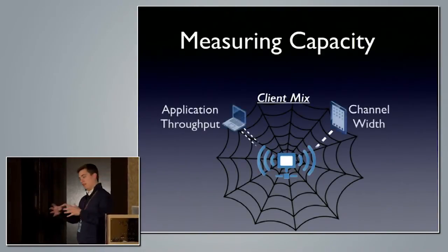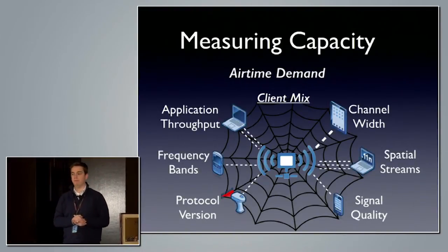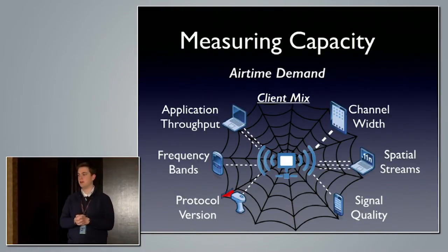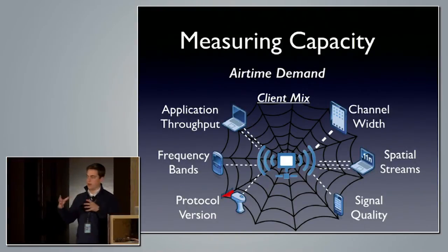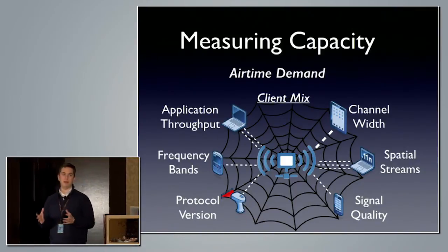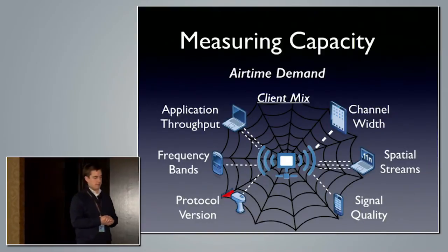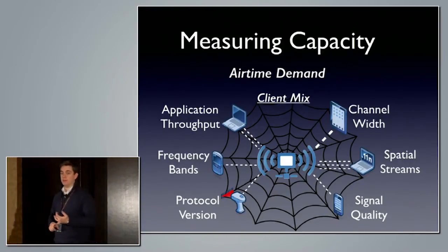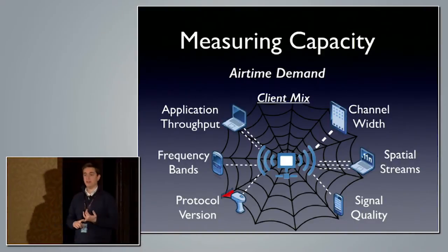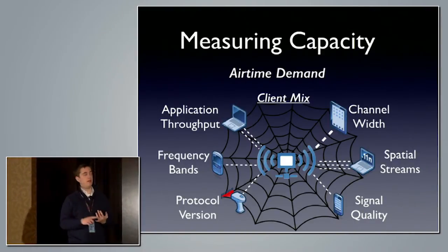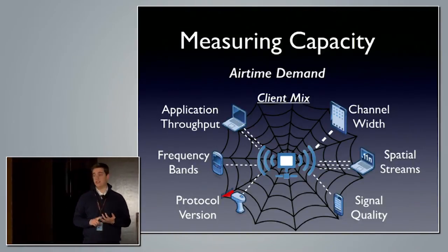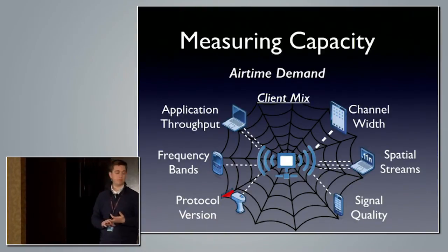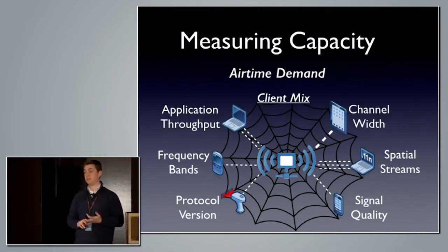We measure capacity within a cell — I'm going to focus on in-cell capacity, not co-channel interference mitigation. Within a cell, how many clients can I pack in there? It's all completely based on airtime demand. What dictates how much airtime every client uses? It's dependent on a lot of variables: the channel width the client supports and is configured on the AP, how many spatial streams it supports, signal quality — which determines data rate and the rate adaptation algorithm — and the protocol mix of clients on your network. Do you still have old 802.11G or 11A clients? And what frequency bands they support.